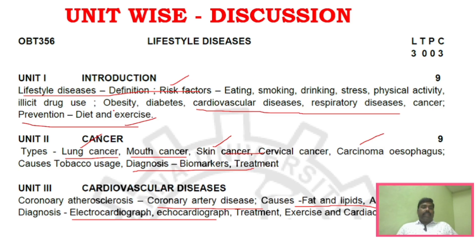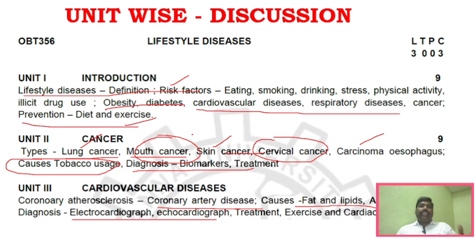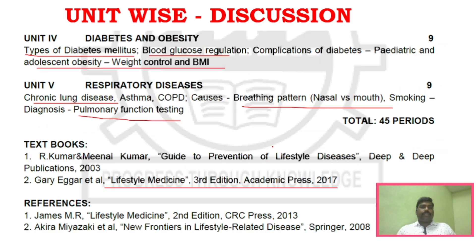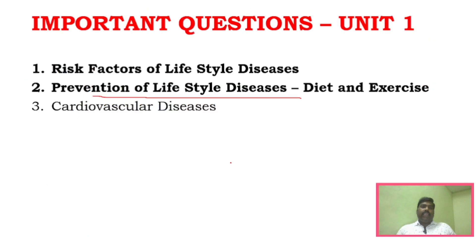For two-mark questions, you can be asked about obesity, diabetes, cancer prevention, cervical cancer, mouth cancer, and the causes of tobacco use. These two-mark questions are easy to score. Similarly, treatment and exercise-related questions for unit 3 are covered, and electrocardiograph and echocardiograph — understand what is what. For unit 4, complications of diabetes and for unit 5, asthma and COPD are important.